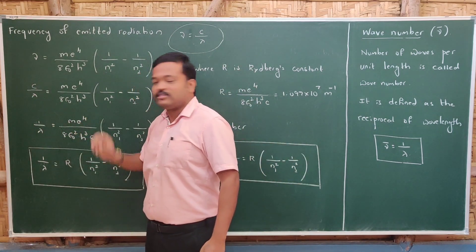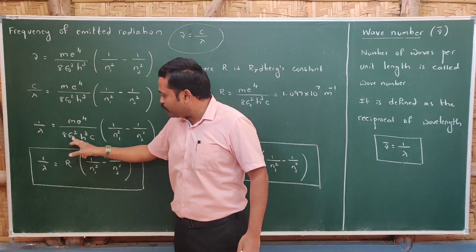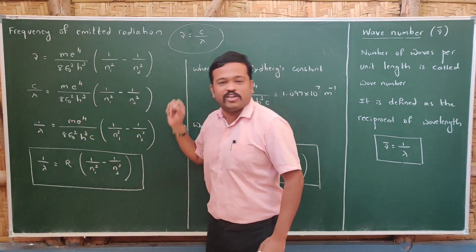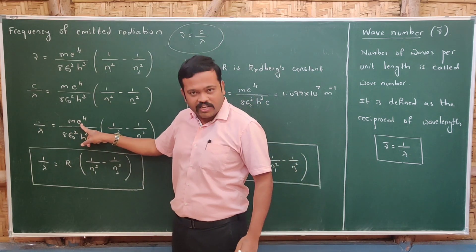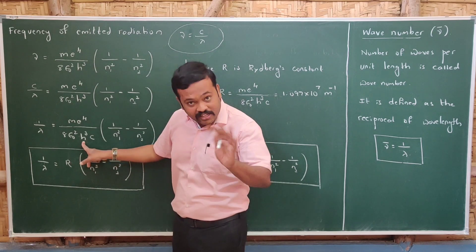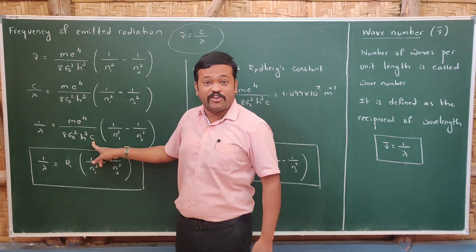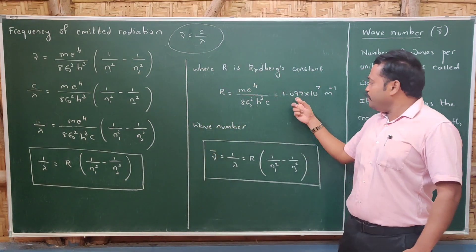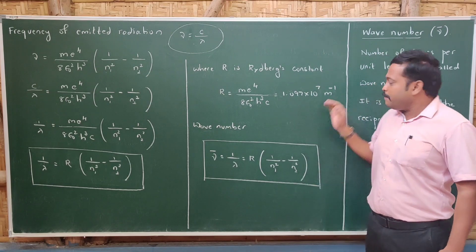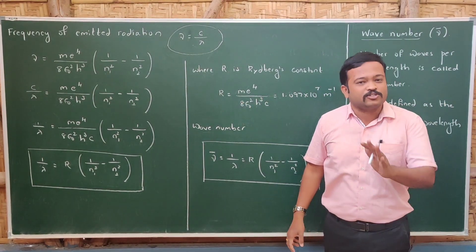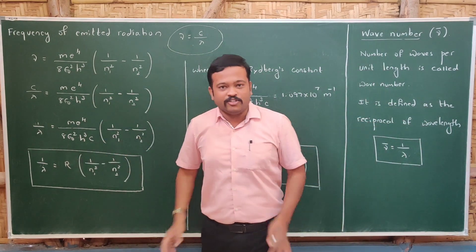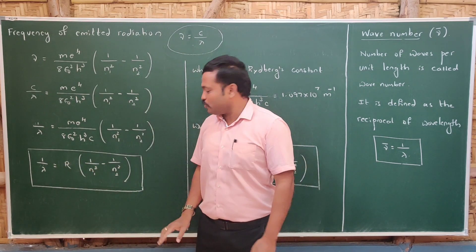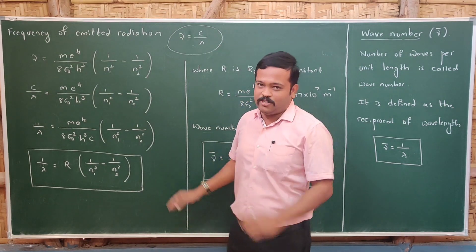Rearranging to get 1/λ on the left and moving c to the right side: 1/λ equals me⁴ divided by 8ε₀²h³c, multiplied by 1/n1² minus 1/n2². In this expression, mass of the electron, charge of the electron, permittivity of free space, Planck's constant, and speed of light are all constants. Substituting all these values gives 1.097 × 10⁷ per meter, which is called the Rydberg constant, R.